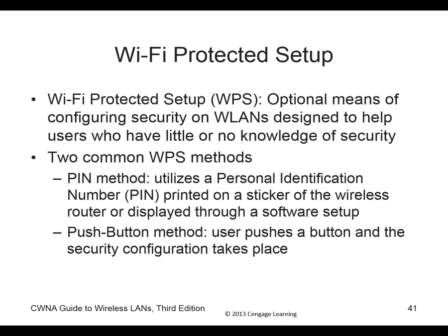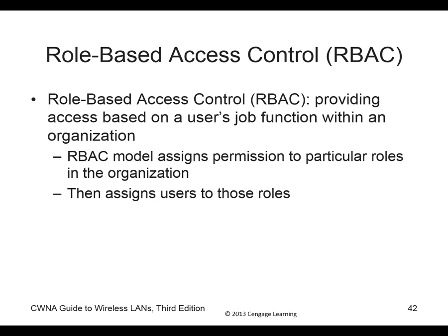WPS has two methods: push-button or PIN. The PIN method is less secure because it's printed on a sticker on the side of the wireless router. Role-Based Access Control (RBAC) — not to be confused with Rule-Based Access Control, which is also called RBAC — provides access based on the user's job function within an organization, assigning permissions based on the individual's role.